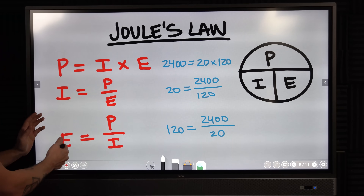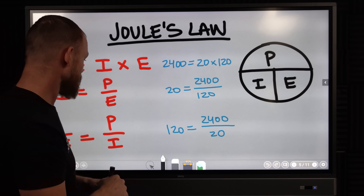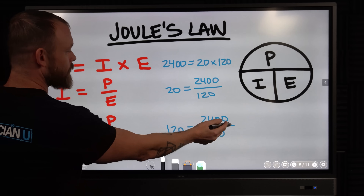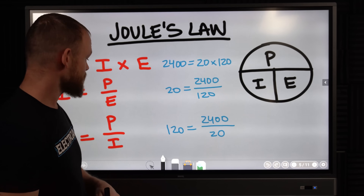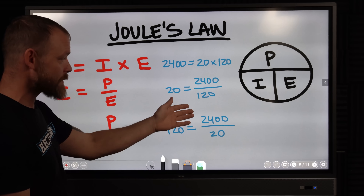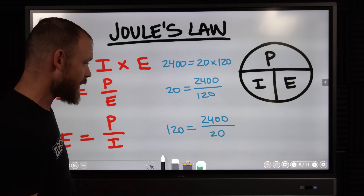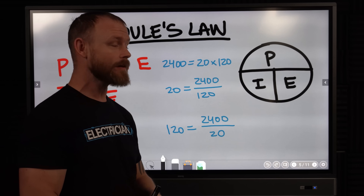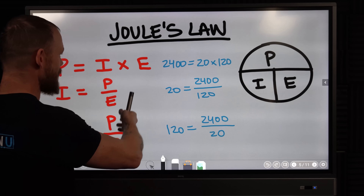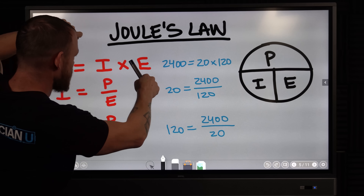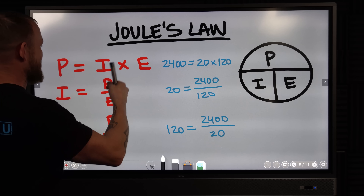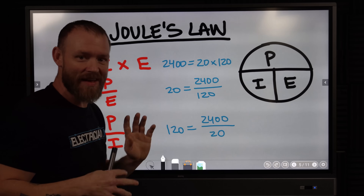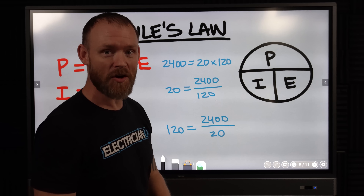Lastly, if you're solving for voltage — which you're rarely going to do — take the wattage and divide by 20 amps and it should give you 120 volts. They all organize neatly. Rather than doing algebra to isolate variables, just remember the pie chart.